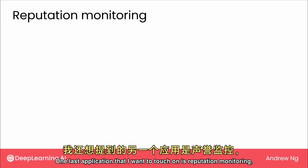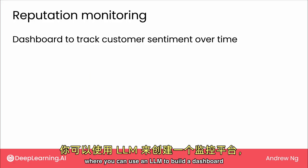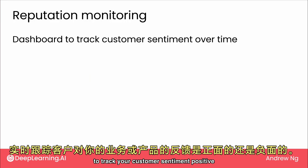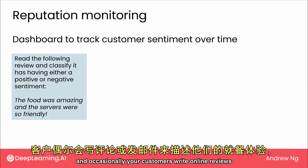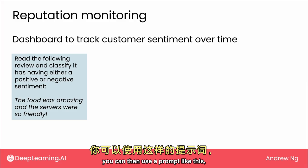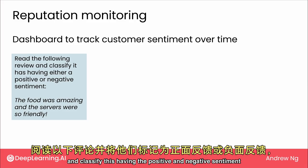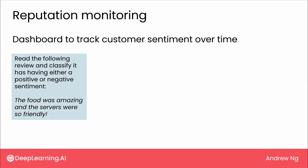One last application I want to touch on is reputation monitoring, where you can use an LLM to build a dashboard to track your customers' sentiments — positive or negative — about your business or products over time. For example, if you run a restaurant and customers write online reviews or send emails describing their experience, you can use a prompt like: 'Read the following review and classify it as having positive or negative sentiment,' to have it automatically decide if each review was positive or negative.